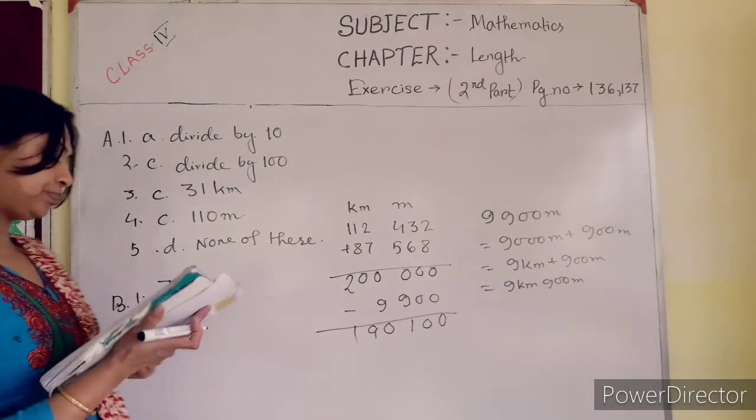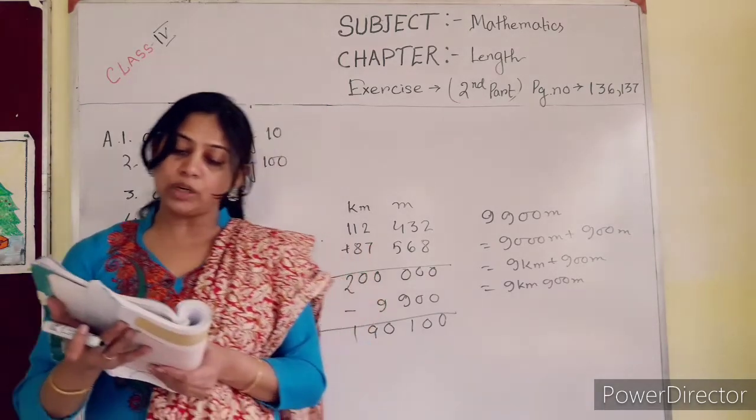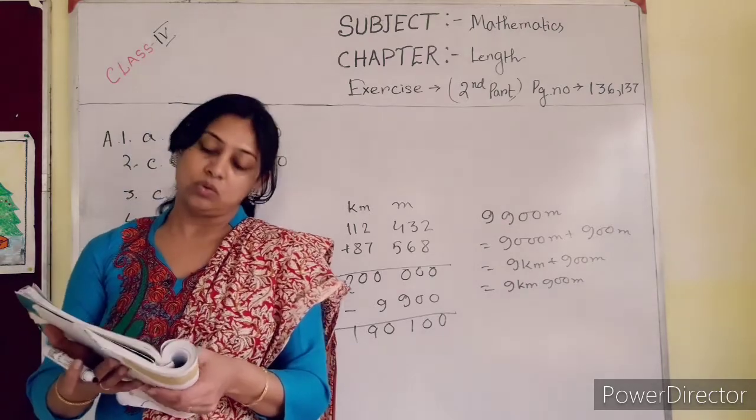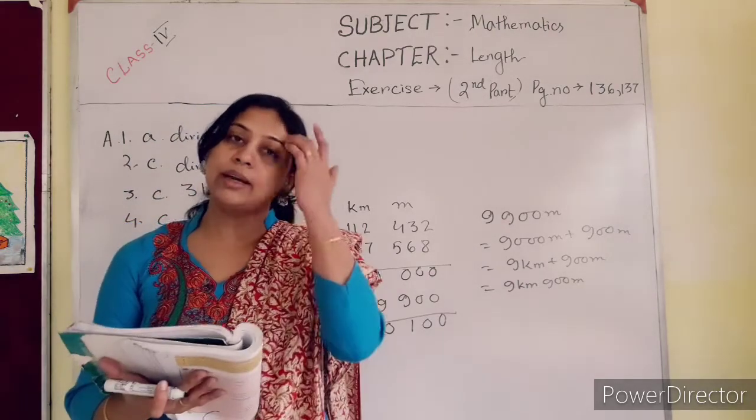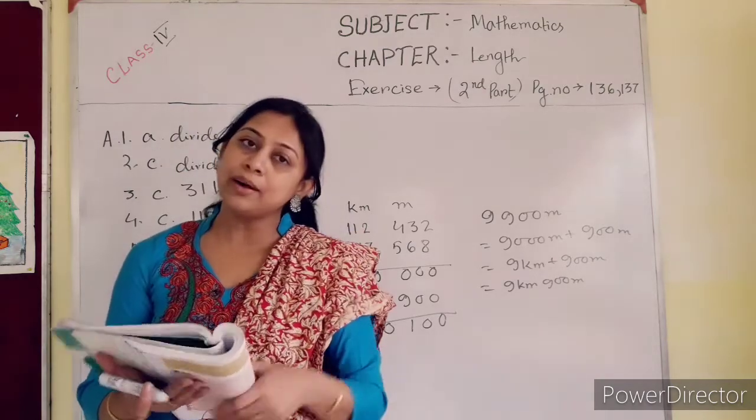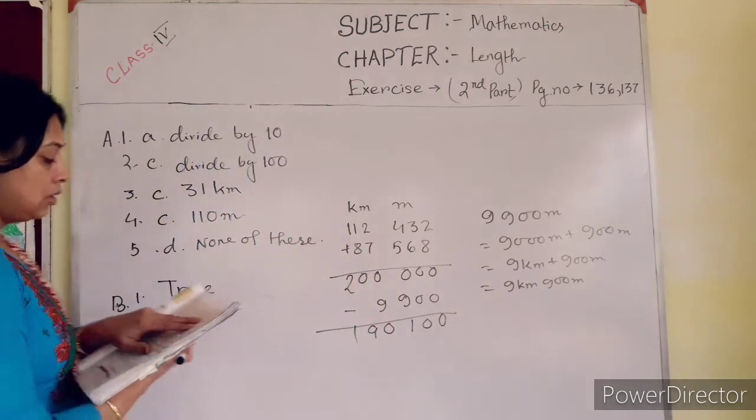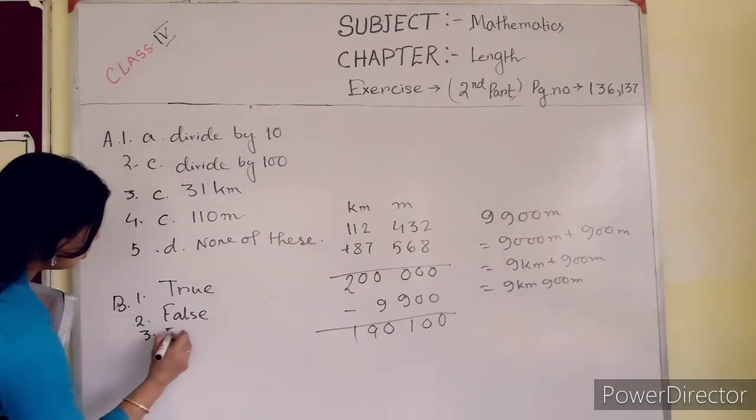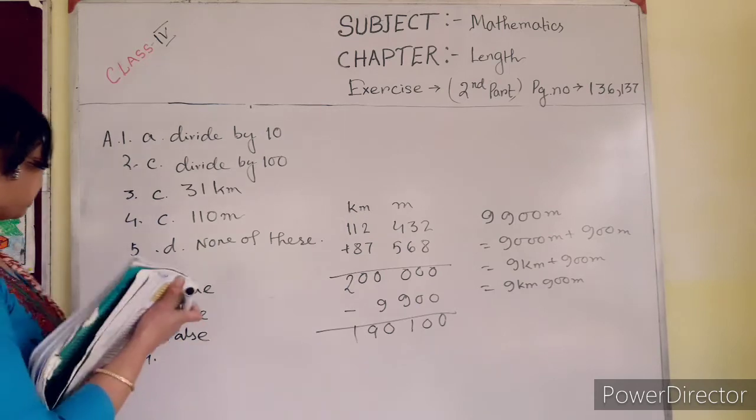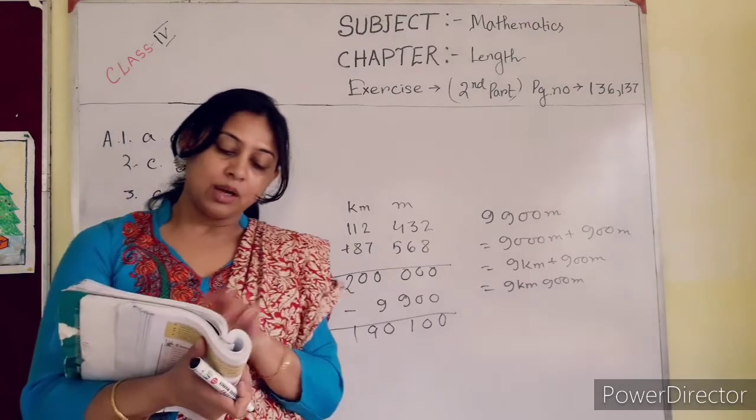Now number 3, 14 kilometer 789 meter rounded to the nearest kilometer is equal to 40 kilometer. No. 14 kilometer 789 meter, it is more than 500, 500 and more than 500, so approximately 15 kilometer. So this one also falls. Is equal to 15 kilometer.